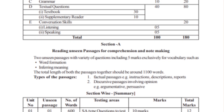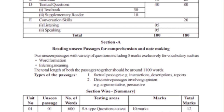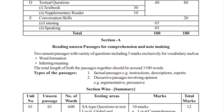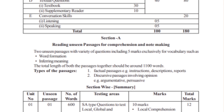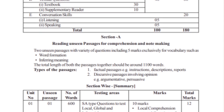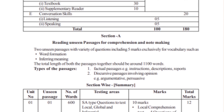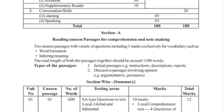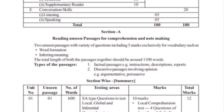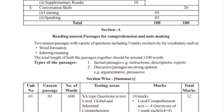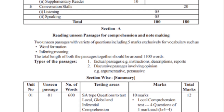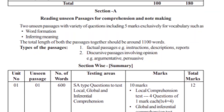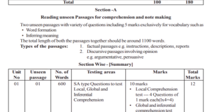The next section is Section A. We will talk about the question paper. Section A is reading unseen passage for comprehension and note making. There are 2 marks on the factual passage and 2 marks on the subject.